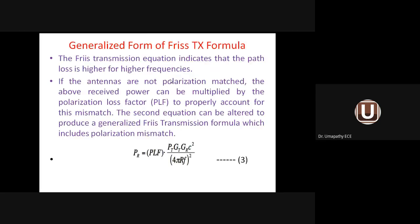This is a brief outline of Unit 1: antenna parameters, polarization mismatch, matching balun, radiation from oscillating current element, radiation from half-wave dipole, folded dipole, and finally Friis transmission formula. These are the various topics connected with Unit 1.